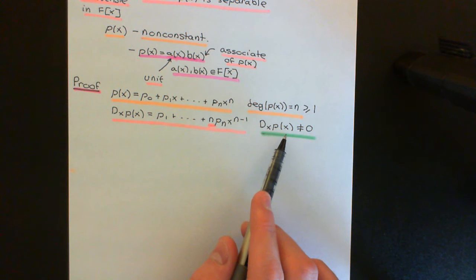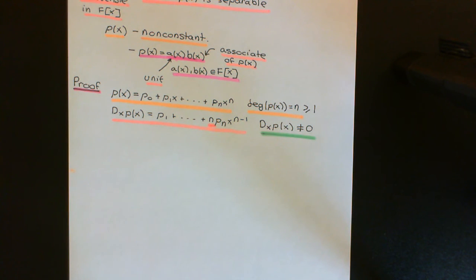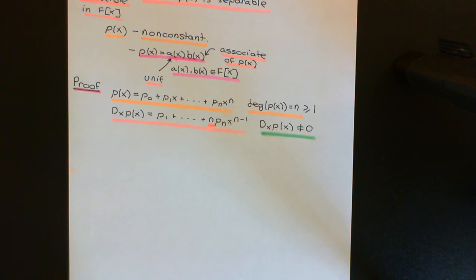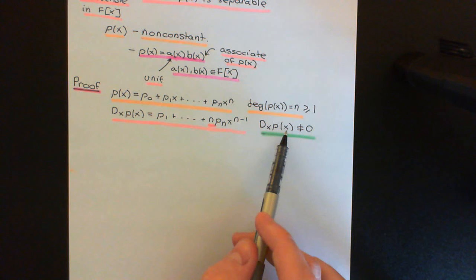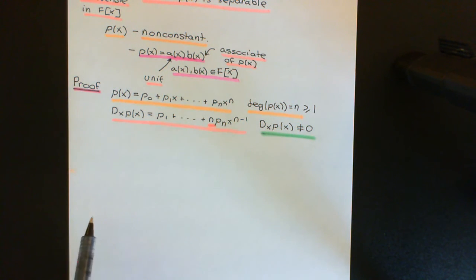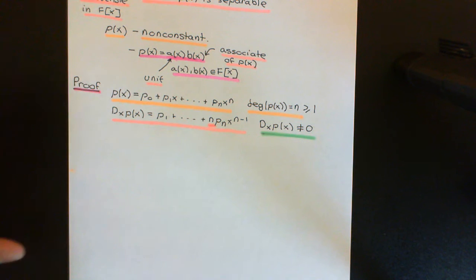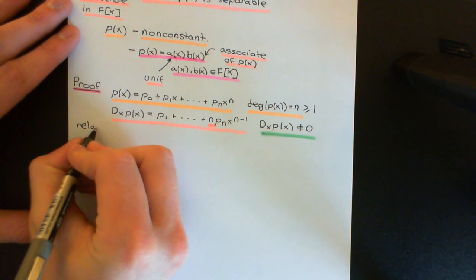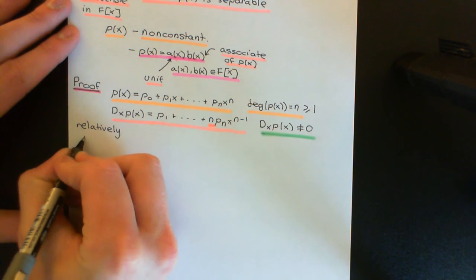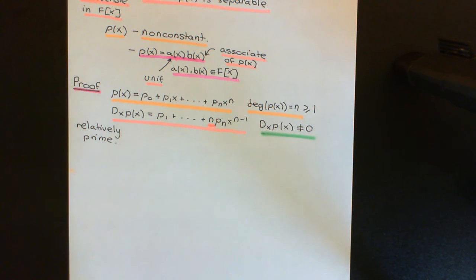Because the degree of the original polynomial was greater than or equal to 1, that told us the derivative is not equal to zero — something we could conclude in characteristic zero. Whereas in characteristic p, we cannot guarantee that so easily. It is actually still true, but we're going to have to produce another proof of it, because this simple argument isn't enough now that we're working in a field of characteristic p. What we need to be able to conclude is that the derivative of the polynomial is not equal to zero, and then we'll be able to proceed with the argument.